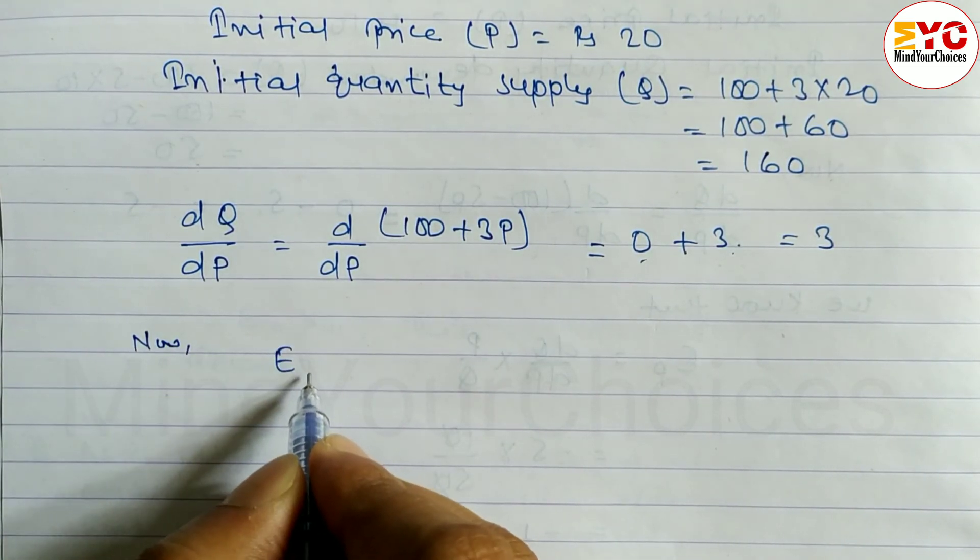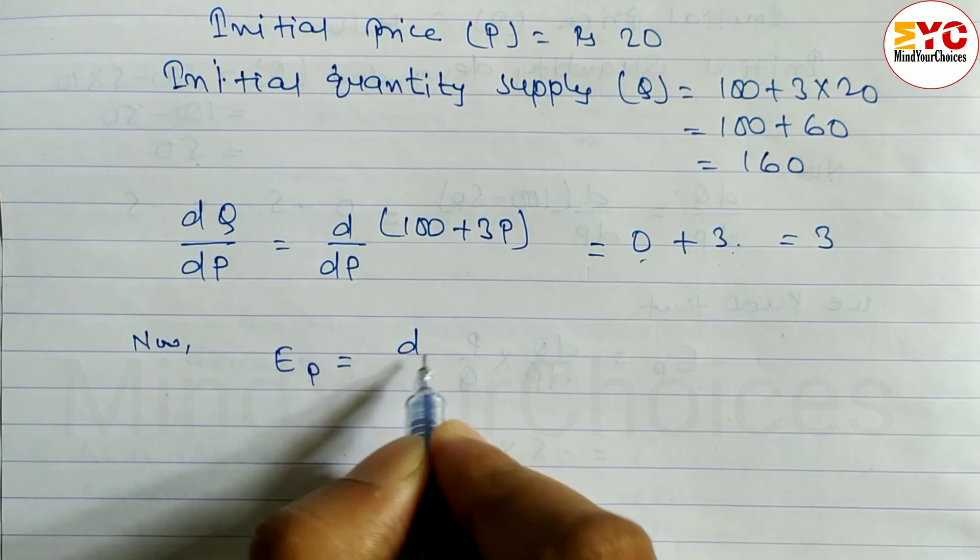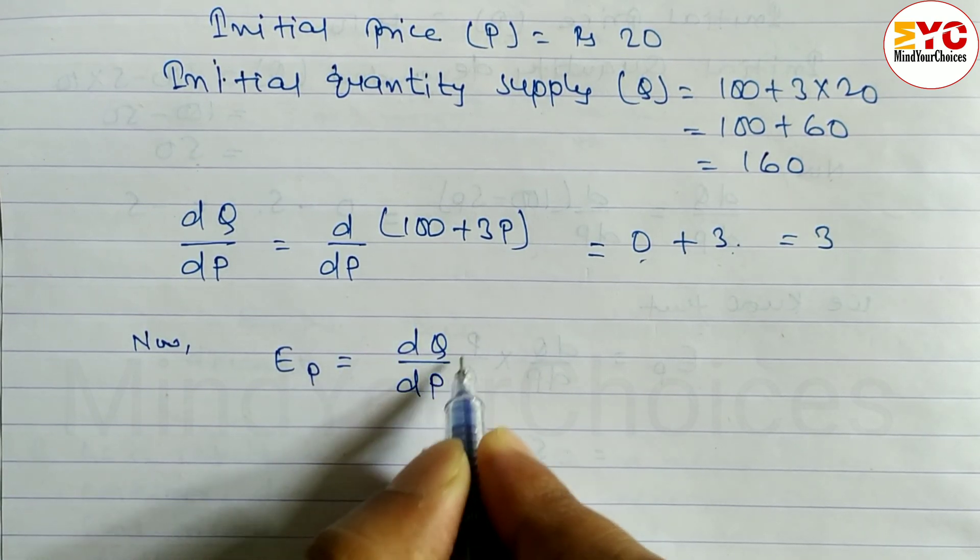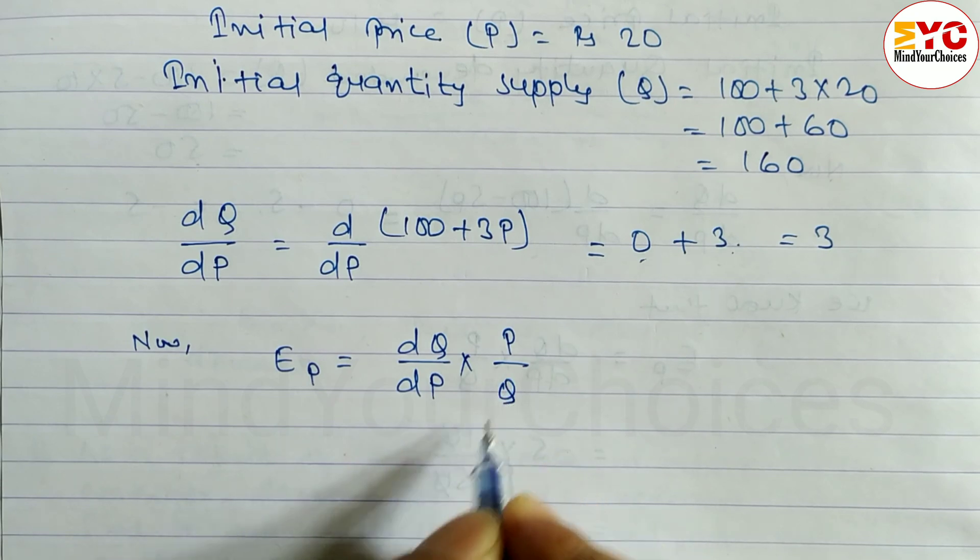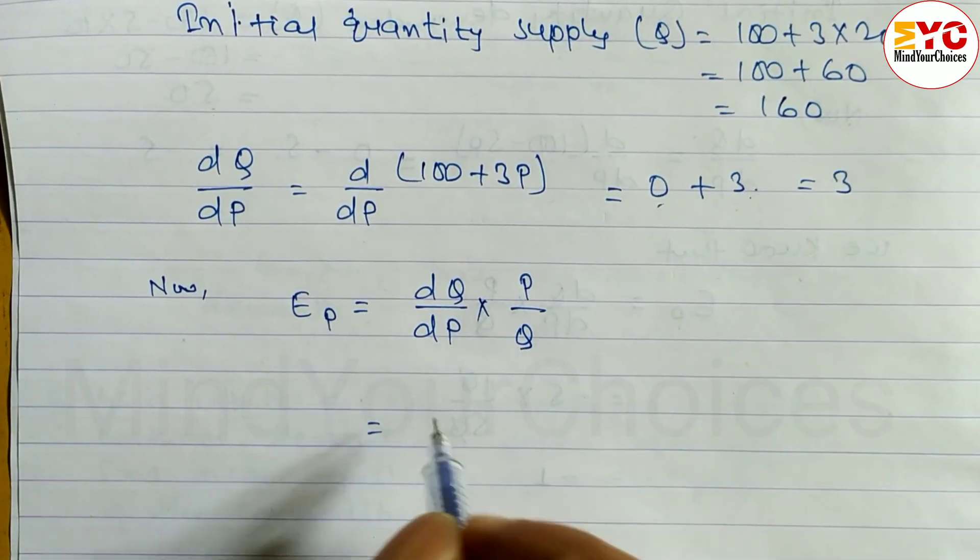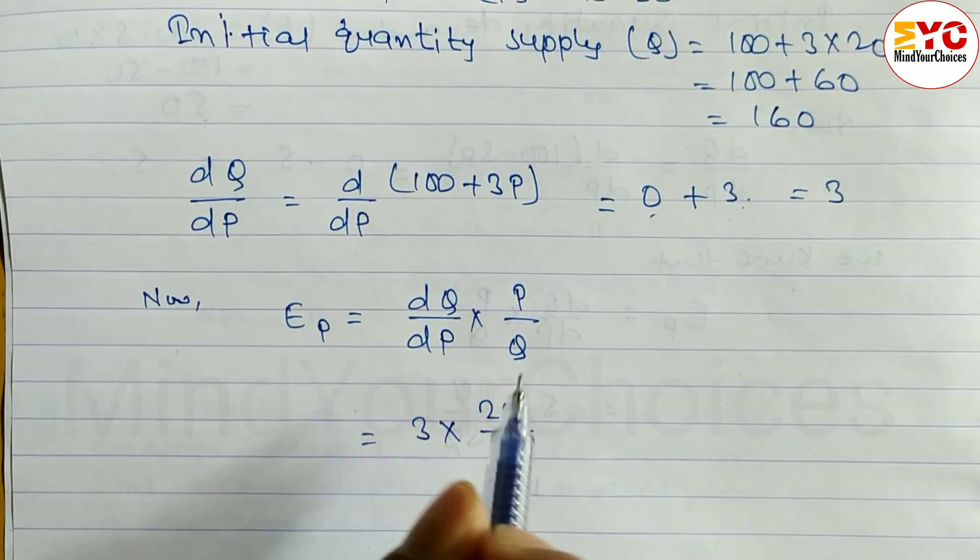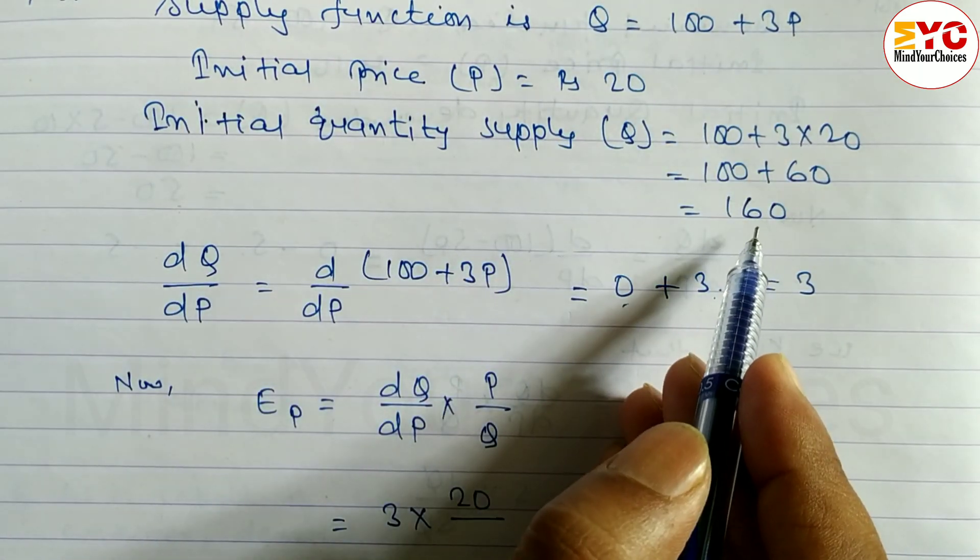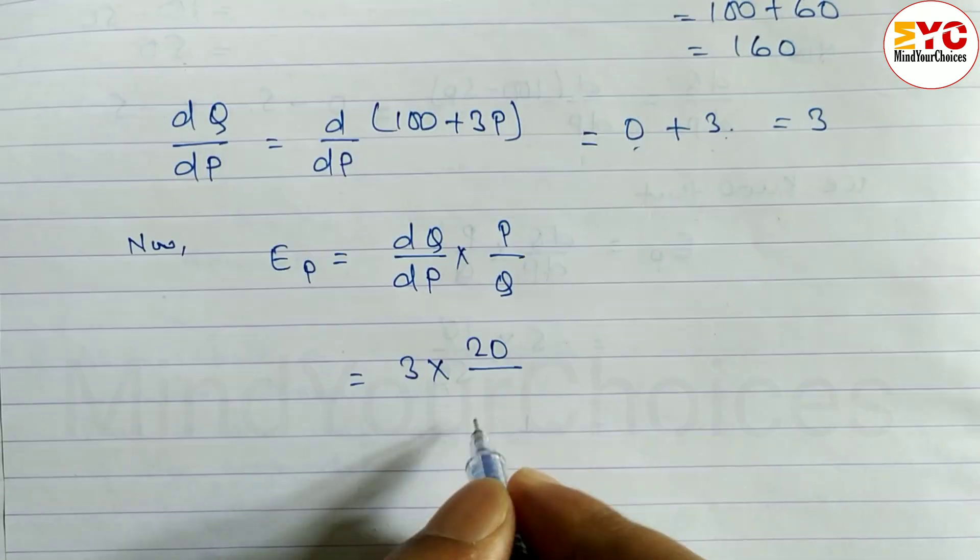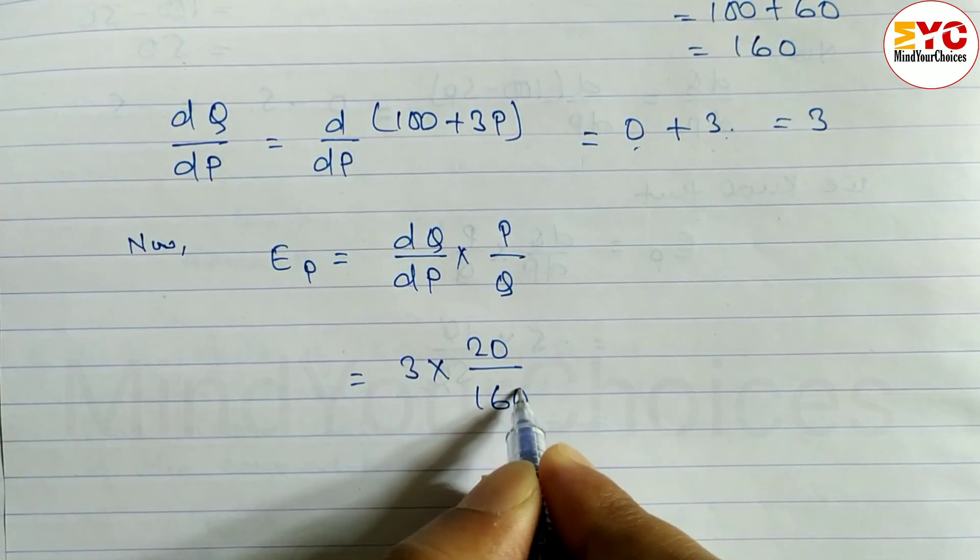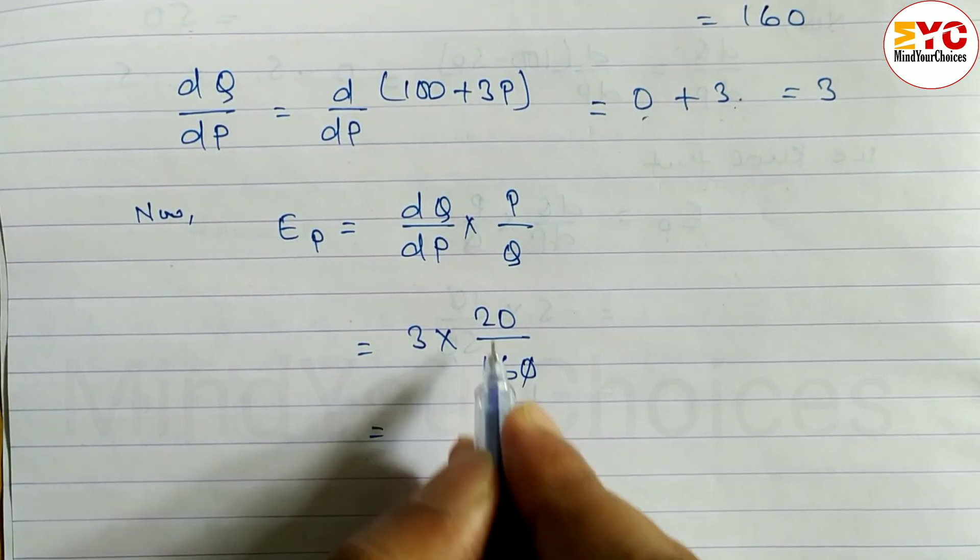Price elasticity of supply formula ep equals dQ/dP times P/Q where dQ/dP is 3, so we have to write 3, P value is 20, so 20 by Q, Q value initial quantity supplied 160, so 160. Just multiply, 0 0 cancel, 3 times 2 is 6 by 16, you can write in decimal we get 0.375, so price elasticity of supply is equal to 0.38.